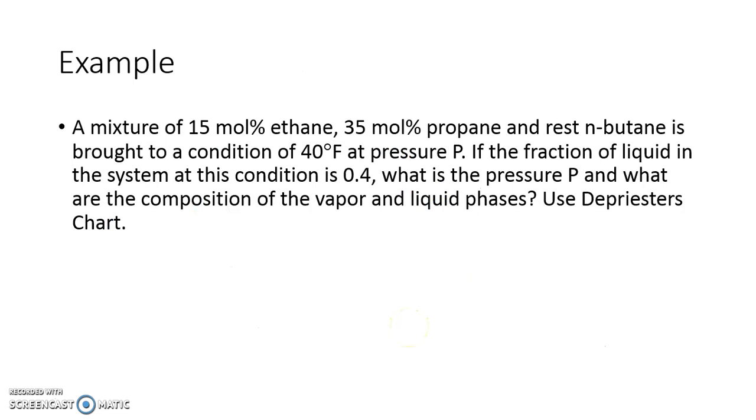Let us take up an example wherein we have a mixture of 15 mol percent ethane, 35 mol percent propane and rest is butane. It is a tertiary system where you have 15 mol percent ethane, 35 mol percent propane and remaining 50 percent to be n-butane.